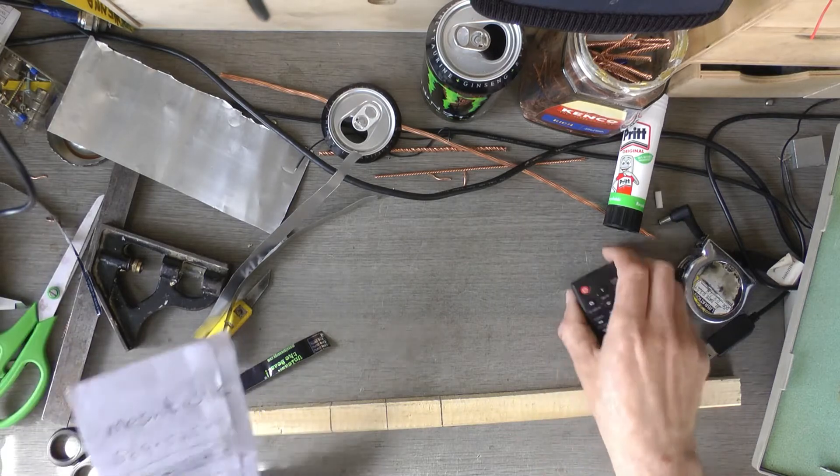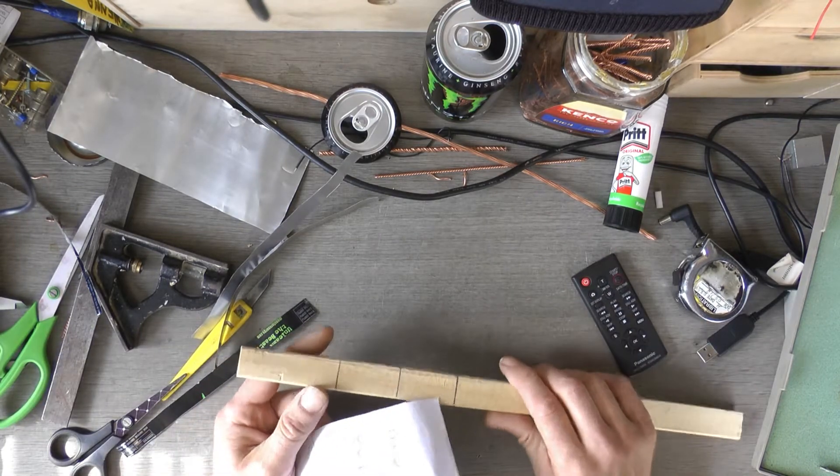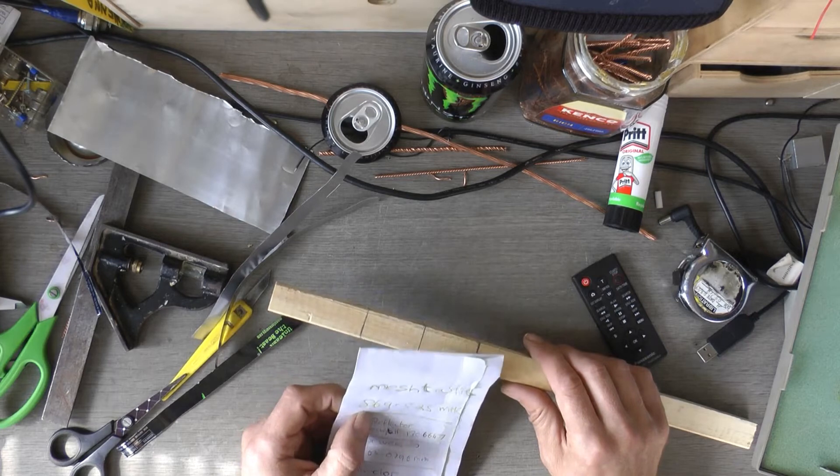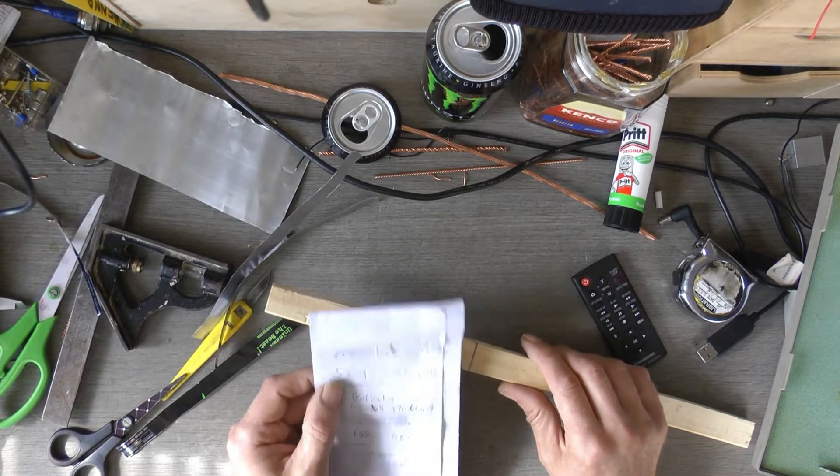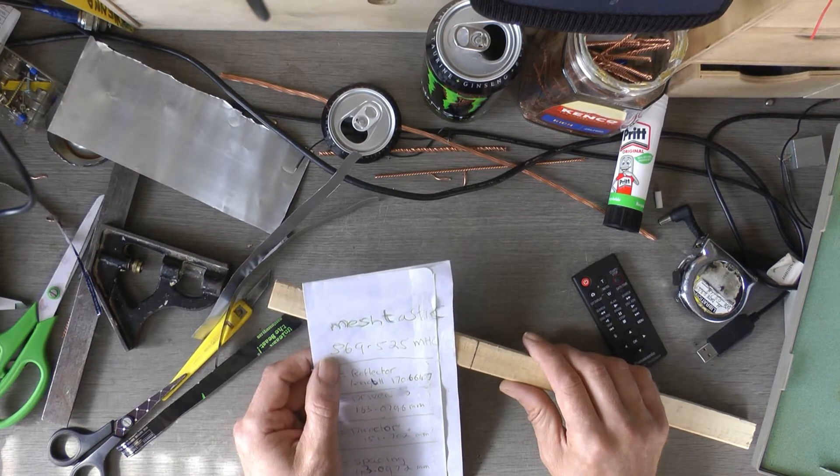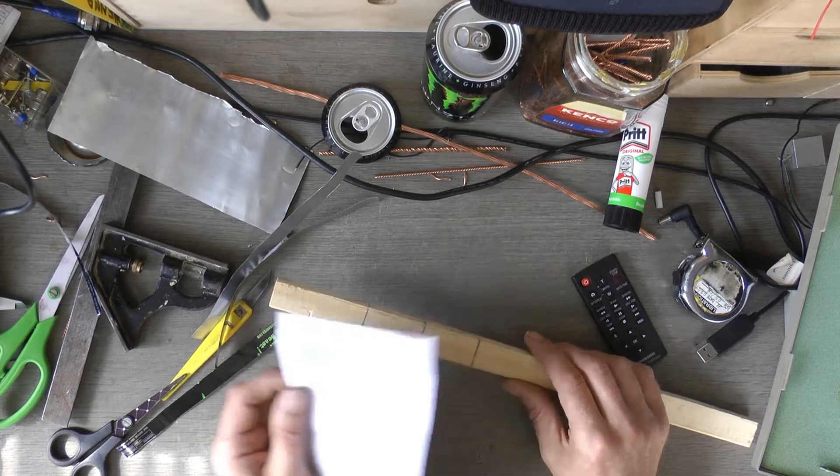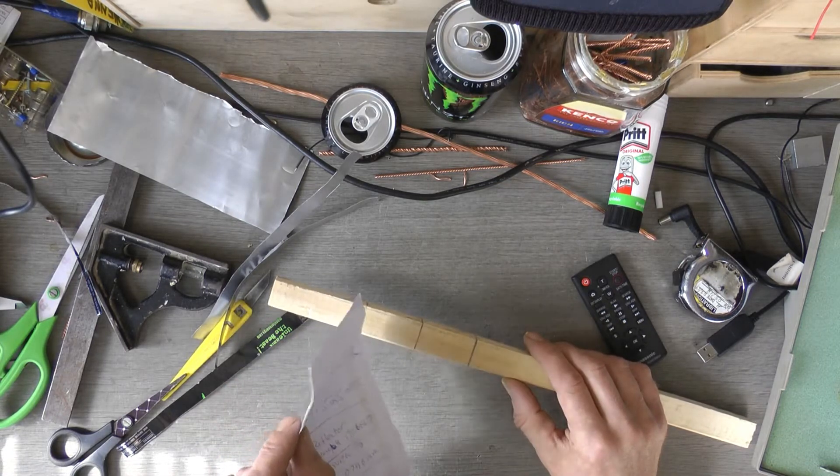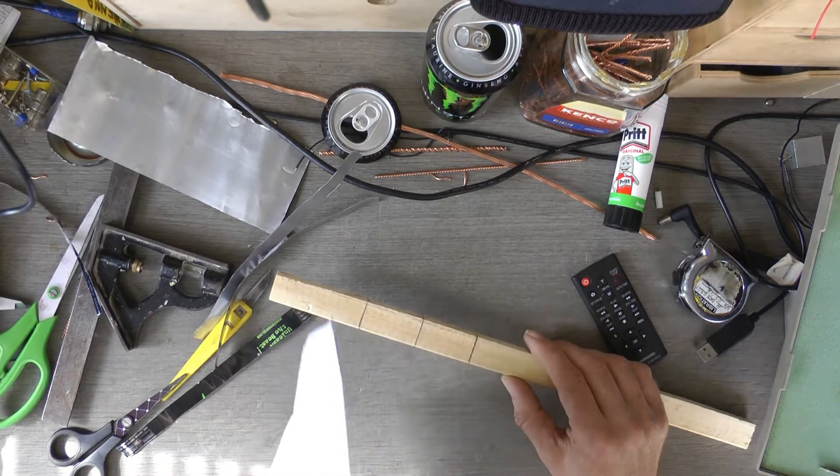Right, so this Yagi antenna is going to be cut for the frequency that my node uses, which is 869.525MHz. That's what I'm going to try and cut the antenna to for that specific frequency.